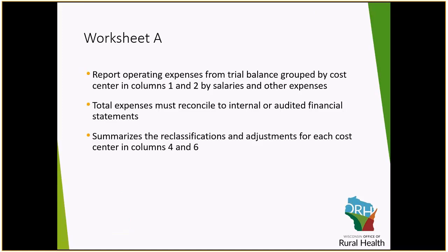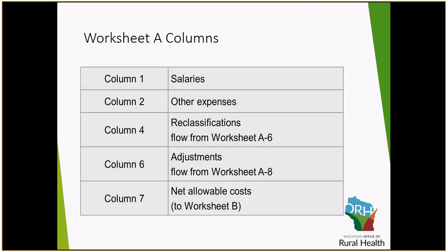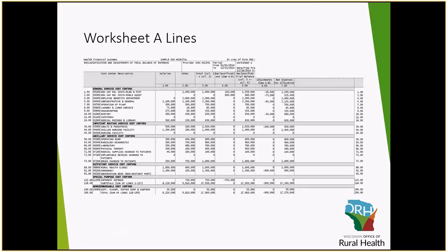As we're moving across Worksheet A, we have the ability to reclassify expenses between cost centers, and Medicare requires us to adjust certain costs off of the cost report. Looking through the Worksheet A columns: column 1 is all salaries, column 2 is all other expenses, column 3 is the sum of 1 and 2, column 4 is where we report all reclassifications — and we always want to make sure that sums to zero at the bottom in line 200. The reclassified trial balance, the sum of columns 3 and 4, is reported in column 5. Column 6 is where we report all adjustments to expenses to get to column 7, which is the net expenses for allocation — your total Medicare allowable expenses.